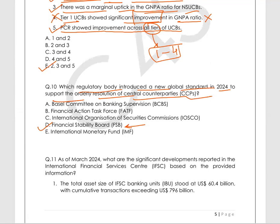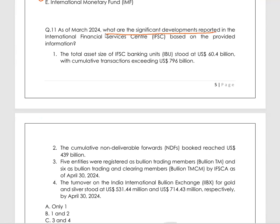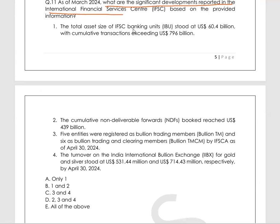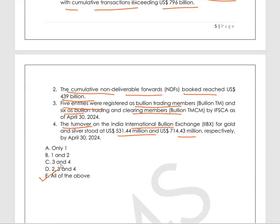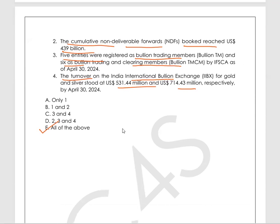Question 11: As of March 2024, what are the significant developments reported in the IFSC? Statement 1 — the total asset size of IFSC banking units stood at a specified figure with cumulative transactions exceeding a certain amount. Statement 2 — the cumulative non-deliverable forwards booked reached a specified amount. Statement 3 — five entities were registered as bullion trading members and six as bullion trading and clearing members. Statement 4 — the turnover on India IIBX for gold and silver reached specified figures. All statements are correct.